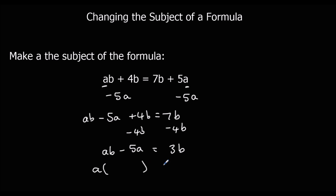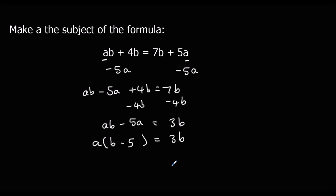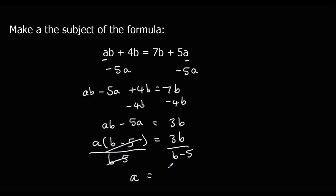I'll make a bracket. A times B makes AB, and A times minus 5 makes minus 5A. So I've factorized it out as A(B minus 5). Then I can divide by (B minus 5) to get A by itself, because they're times at the moment. So I divide both sides by (B minus 5) — that cancels out, leaving A equals 3B over (B minus 5).